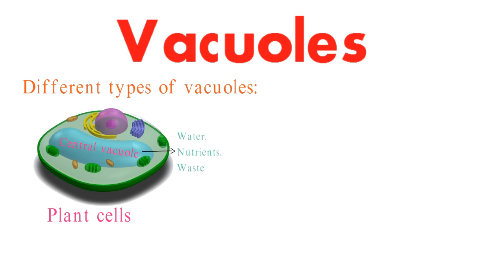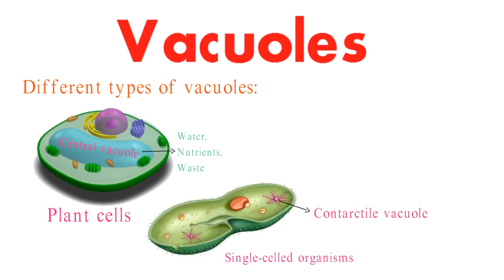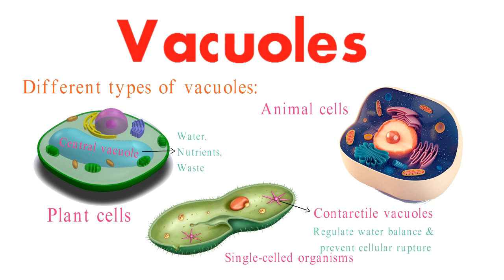Meanwhile, in single-celled organisms, contractile vacuoles work diligently to regulate water balance and prevent cellular rupture. And in animal cells, lysosomes serve as specialized vacuoles, packed with enzymes for cellular digestion.